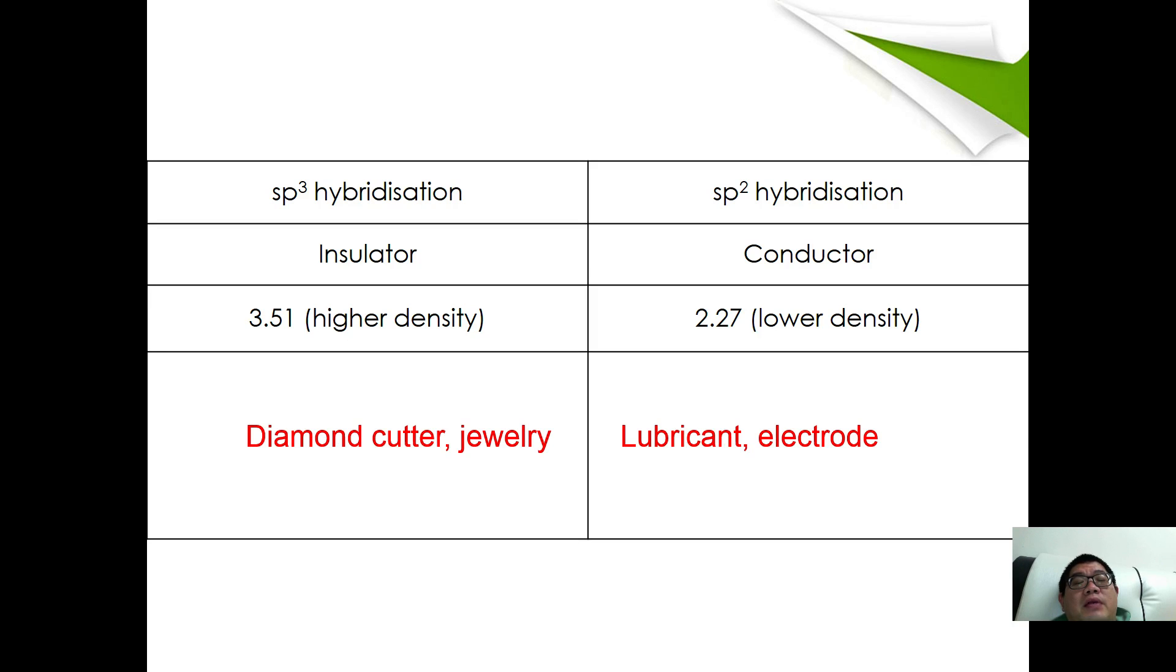These are the applications of diamond and graphite. Diamond can be used as diamond cutter and also jewelry. As for graphite, it can be used as lubricant and also electrodes.